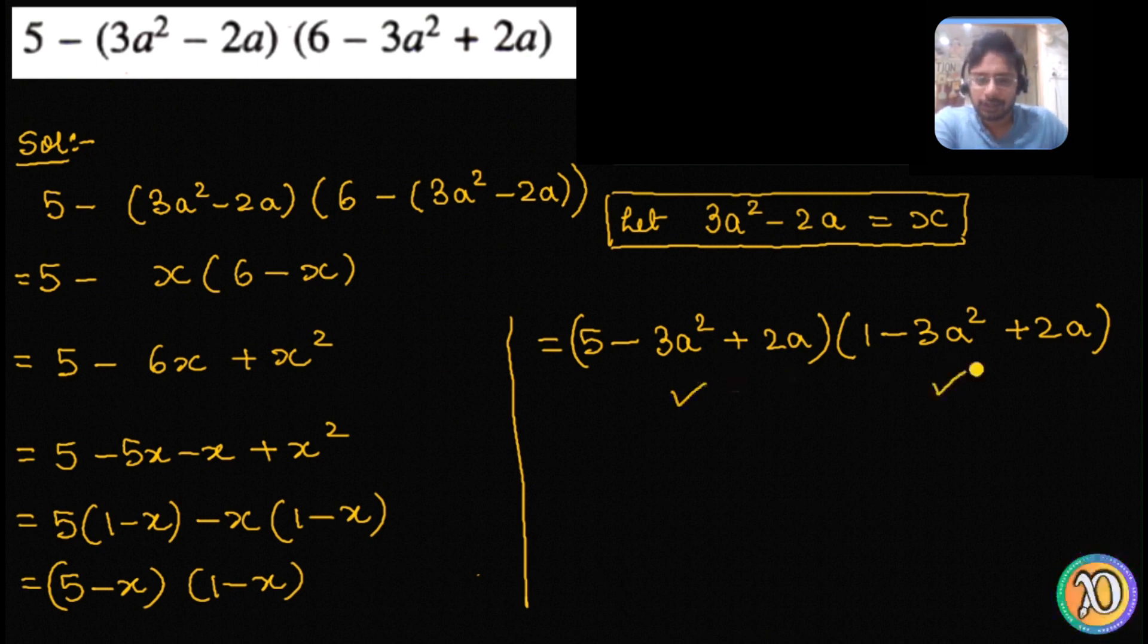When I observe these two brackets, it feels like they are again a quadratic polynomial, isn't it? So that means there is still more work to be done. This is not over.